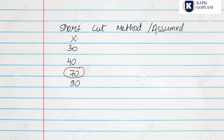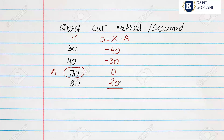With assumed value A = 70, calculate deviations: 30 − 70 = −40; 40 − 70 = −30; 70 − 70 = 0; 90 − 70 = +20. Now find the sum of deviations: −40 + (−30) + 0 + 20 = −50. So summation of D = −50.